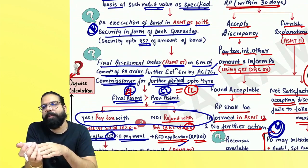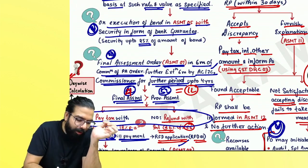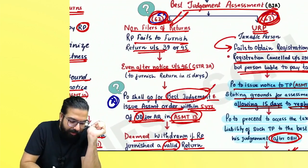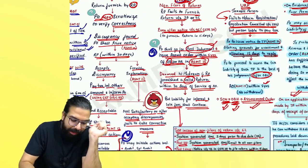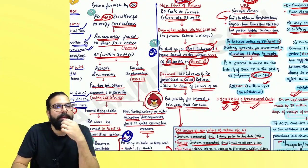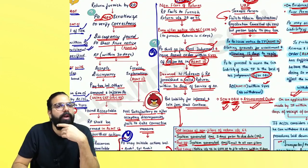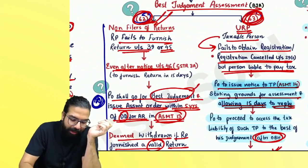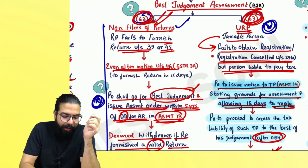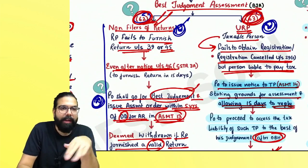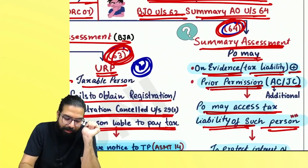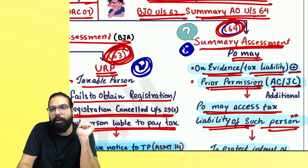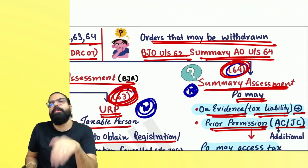They can ask: what is the time limit to pass the final assessment order? What is the time limit for a best judgment assessment order? They can ask you to write a note on best judgment assessment of a non-filer of return, or best judgment assessment of an unregistered person. They can also ask you to write a note on summary assessment.